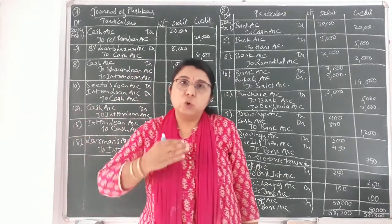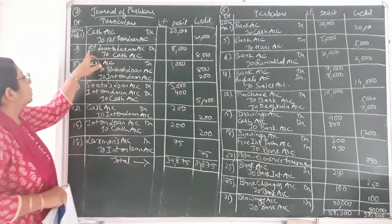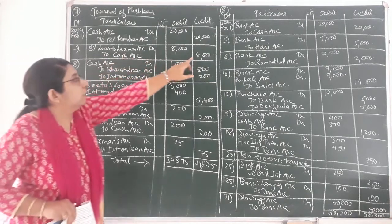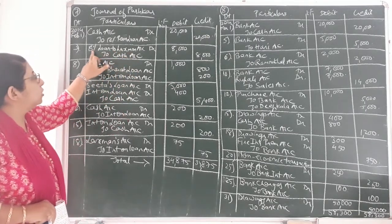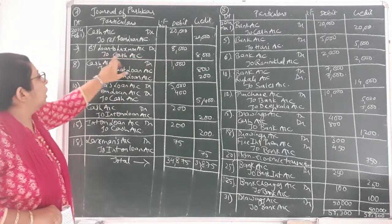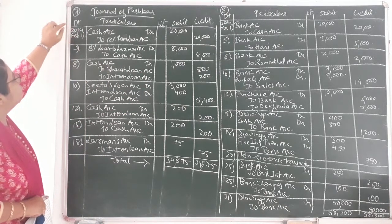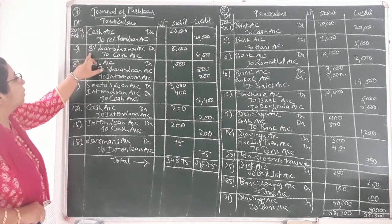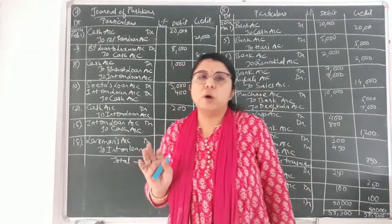Due to giving of the loan, the cash goes out of the firm and Lakshman is the receiver of that loan. So debit the receiver. The second journal entry is: 8% loan to Lakshman's account debit 8,000 to cash account credit 8,000, because cash goes out. As per the rule of real account, credit what goes out, and as per the rule of personal account, debit the receiver. The narration: being loan lent to Lakshman.